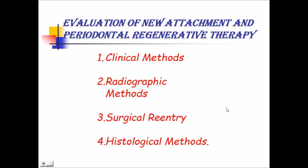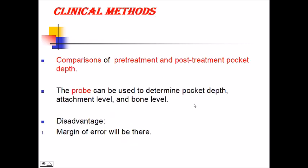How can we evaluate new attachment in periodontal regeneration? Various methods are: clinical methods, radiographic methods, surgical reentry, and histological methods. In the clinical method, we compare pre-op and post-op clinical cases with the help of a periodontal probe, which can determine pocket depth, attachment level, and bone level. The major disadvantage is that a margin of error will always be there.